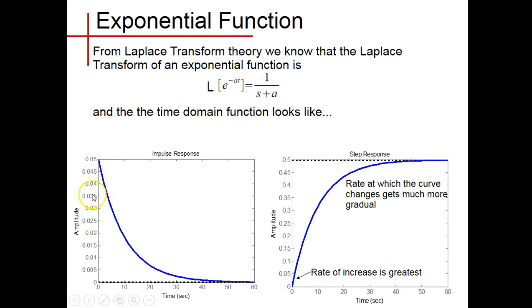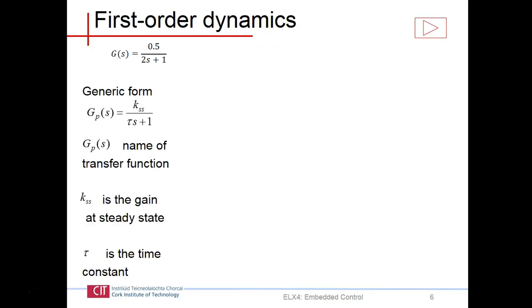A first order system, a pure first order system, looks something like this when we put in a step. We should see a very sharp rate of increase at the start, and then as the exponential function grows, the rate of increase slows down. If you draw tangents to the curve at different points, at the start the tangent is steepest, and as we progress the angles are a lot less steep. Eventually it levels out. That's what we'd expect to see with a pure first order system. Most physical systems aren't pure first order systems, but in theory that's what it'll look like.